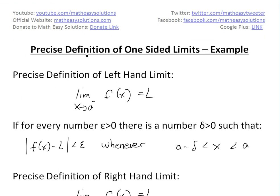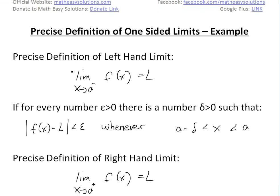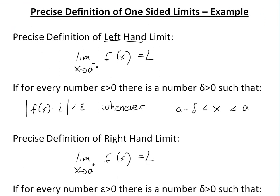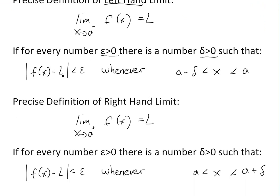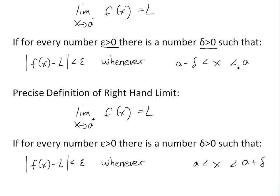I went over this in my earlier video, I'm just going to recap quickly. The precise definition of a left-hand limit — the limit as x approaches a from the left side — states that the limit of f(x) equals L if for every number epsilon greater than zero, there's a number delta greater than zero such that the difference |f(x) - L| is less than epsilon, whenever x is between a minus delta and a.